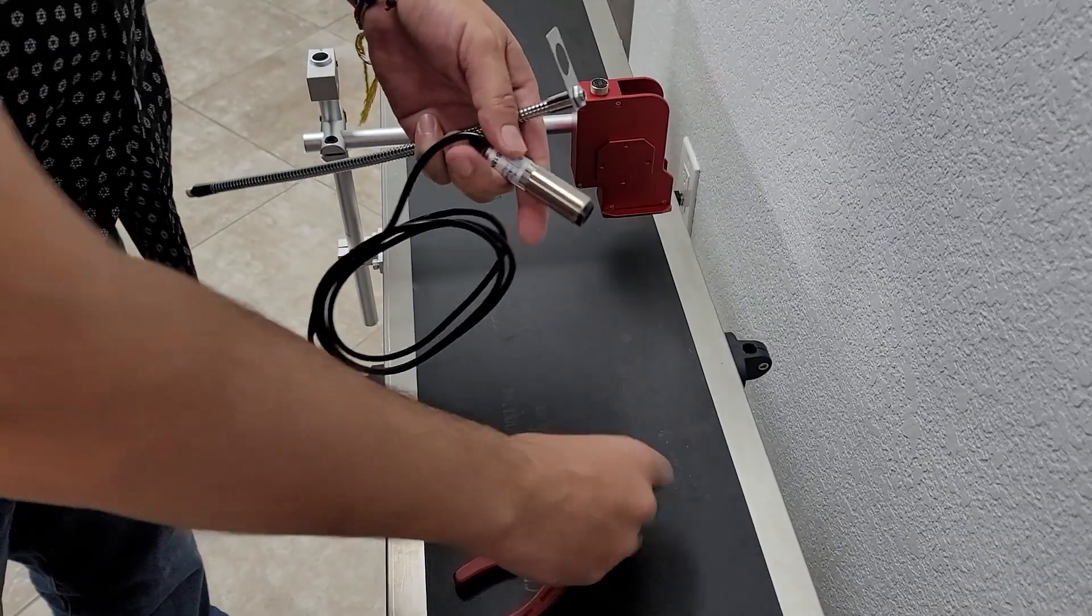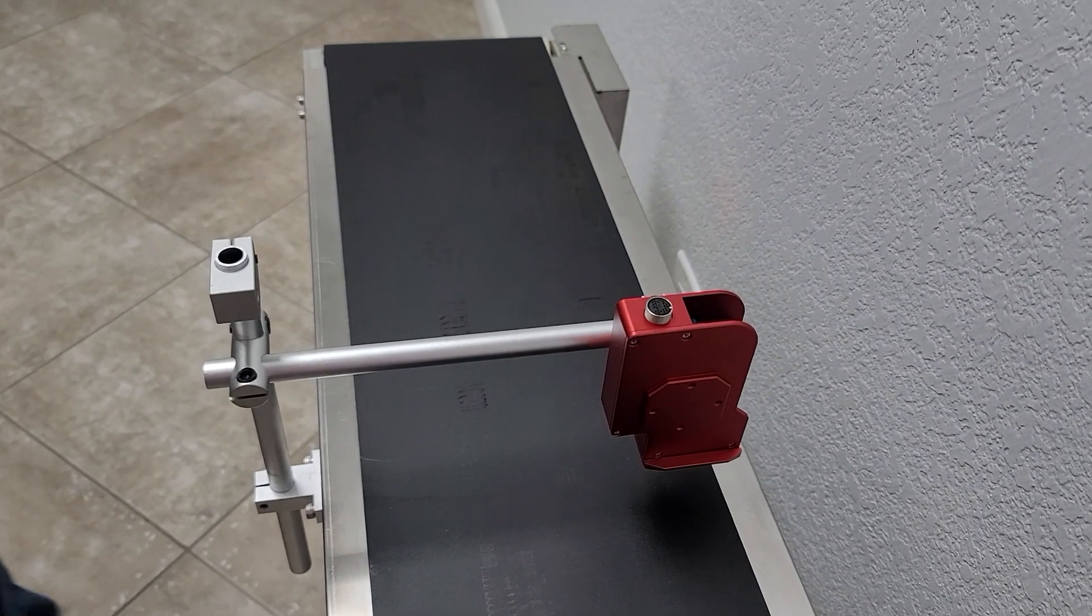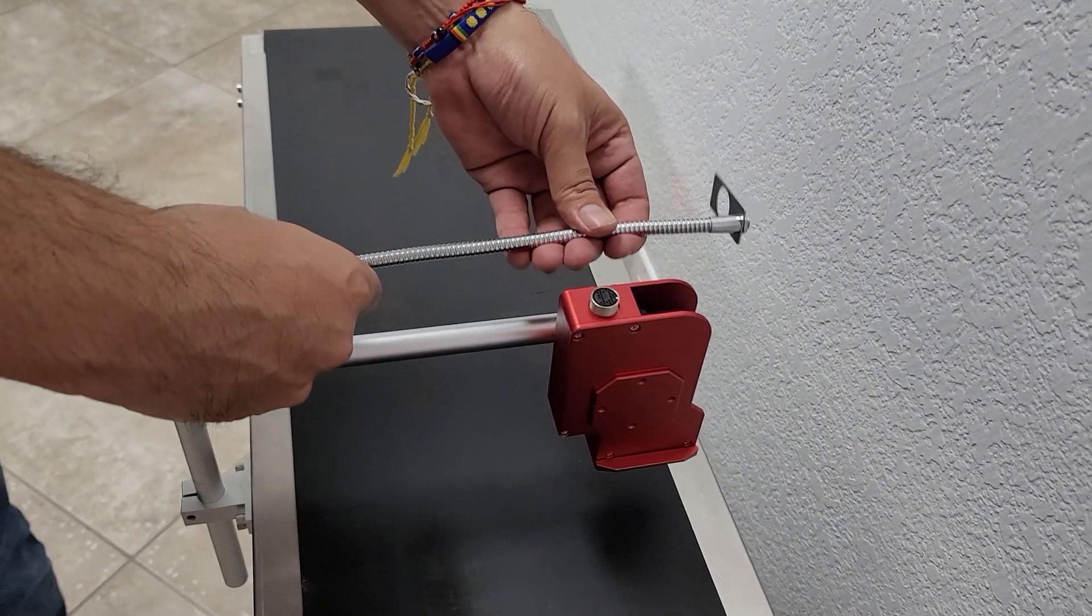Then we'll go ahead and slide one of these retaining nuts onto the sensor. Now that you've seen how it assembles, we'll go ahead and attach the flexible arm.